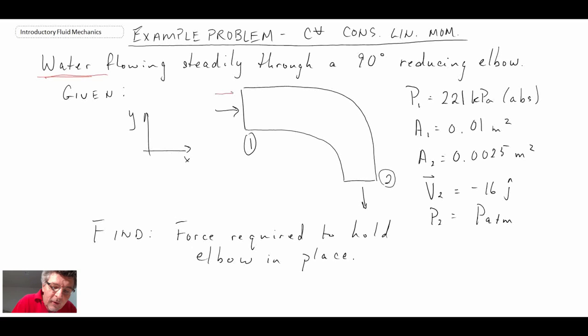Water coming in, it's flowing in this direction here. Uniform flow and then it is flowing out. It's a reducing elbow. That means that the diameter on the exit or the area of the exit is going to be smaller, and consequently we have the liquid going at a higher velocity coming out.